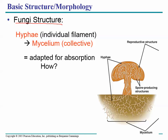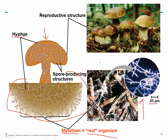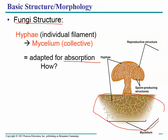Each individual filament is called the hyphae; collectively all the hyphae are called the mycelium. How is the mycelium adapted for absorption? That's how the fungus gets its nutrition — through absorption. The mycelium has a very, very high surface area to volume ratio, and all that surface area allows for greater absorption rates. Whenever you need absorption, you find a high surface area to volume ratio. If you look inside your own intestines, you see all these little villi that increase the surface area — the villi increase the surface area of your own intestines in exactly the same way.